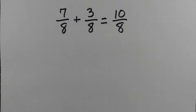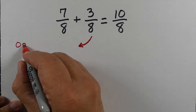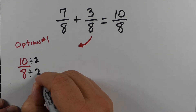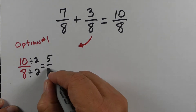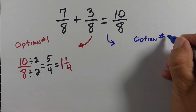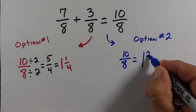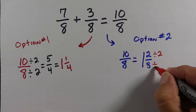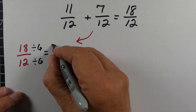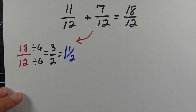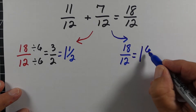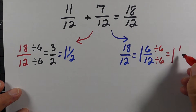Occasionally we'll have improper fractions where we also need to simplify, and we have two options. In this example, 7/8 plus 3/8 is 10/8. Option one: find a number that divides into both the numerator and denominator — in this case 2 — to get 5/4, then convert to a mixed number: 4 goes into 5 once with remainder 1, giving 1 and 1/4. Option two: convert 10/8 to a mixed number first, then simplify the fraction by dividing by 2 — giving 1 and 1/4. Same answer. Likewise with 18/12: divide by 6 first to get 3/2 then mixed number 1 and 1/2, or convert to mixed number 1 and 6/12 first then simplify to 1 and 1/2.